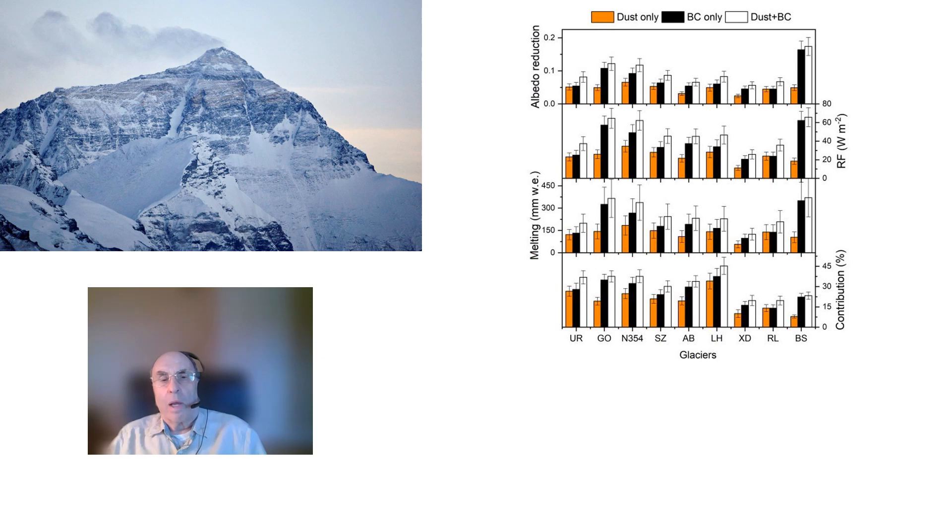The chart on the right shows data from 10 different glaciers in the Himalayas. There are two different kinds of light absorbing particles that contribute to this glacier melting. One is just ordinary dust, while the other is black carbon.